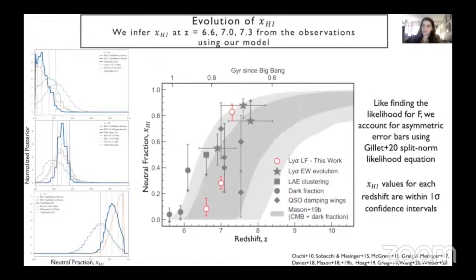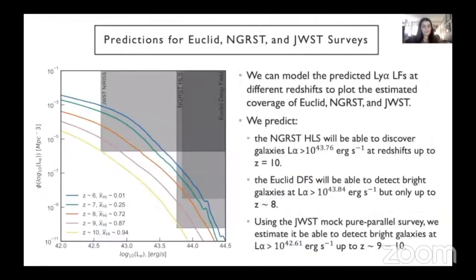Here we show our reionization history timeline updated with our new values. Once we established our model, we determined the evolution of the neutral fraction using a Bayesian approach. Similar to finding the likelihood for the fudge factor, we used Charlotte's likelihood equation for each luminosity function bin with a uniform prior in neutral fraction. We find that the Lyman-alpha observations prefer a later and rapid reionization that is consistent within two-sigma confidence intervals with other observations at similar redshifts. These values are shown as the red points on the timeline. We also plot our model Lyman-alpha luminosity function with the approximate median neutral fraction based on the reionization history allowed by the CMB optical depth and the dark pixel fraction at each redshift — based on Charlotte's 2019 paper — between redshifts 6 to 10, shown as the gray shaded regions.